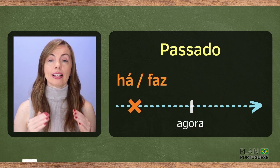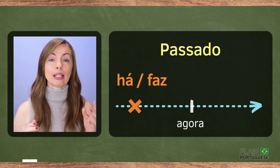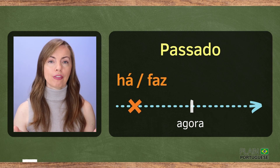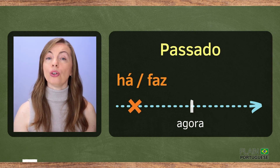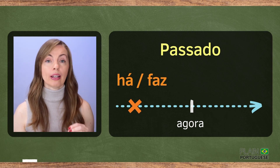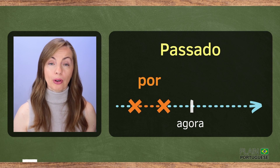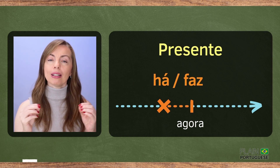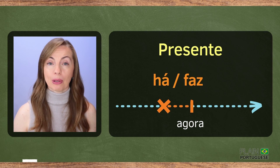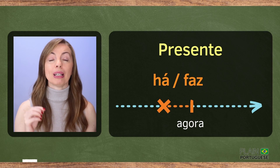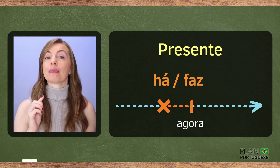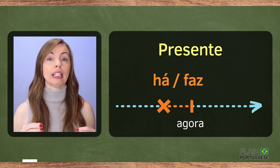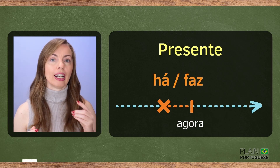At the beginning of the lesson you learned that when talking about time, the verbs há and faz are equivalent in meaning to 'ago,' and the preposition por is equivalent to 'for.' But now you just learned that when talking about time in the present, the verbs há and faz are equivalent in meaning to 'for.'